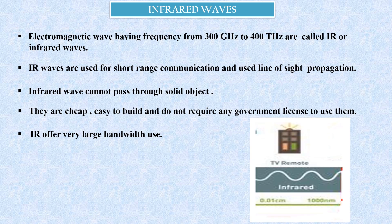Infrared waves, or millimeter waves, are electromagnetic waves having frequency from 300 GHz to 400 THz. Infrared waves are used for short-range communication and use line-of-sight propagation — the sender and receiver should be in line of sight. Infrared waves cannot pass through solid objects. They are cheap, easy to build, and do not require any government license. IR offers a very large bandwidth. The best example of an IR wave is your TV remote control.